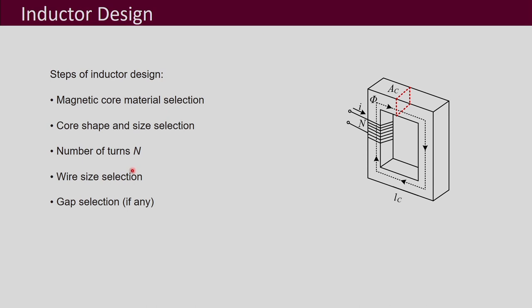Wires are available in various sizes, so you will choose the gauge of the wire for your inductor design. Further, if you need an air gap for your particular magnetic design, you will also decide the length of that air gap.